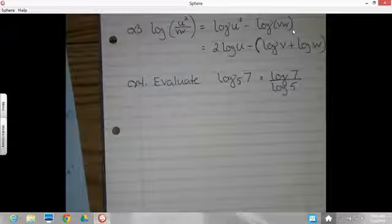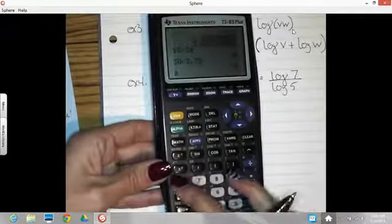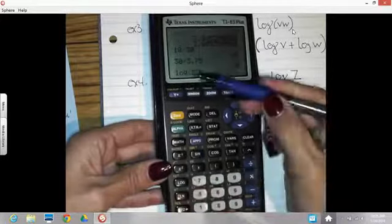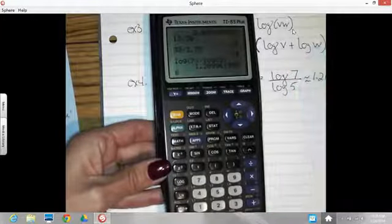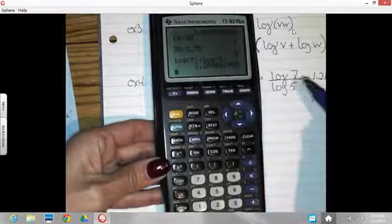So real simple now. Log of seven. Notice a parenthesis came up when I hit the log button. I've got to close that. Divide by log of five. So about 1.21. So just don't forget to close your parenthesis after your number.